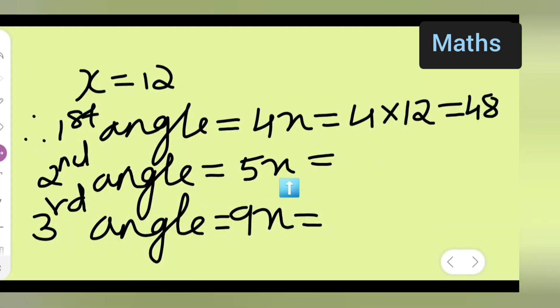5x, so 5 into 12. Because you have taken the angle to be x, so now you have to find all the angles from the ratios. Second angle is 5 into 12, the value of x is 12. So 5 times 12 is 60.